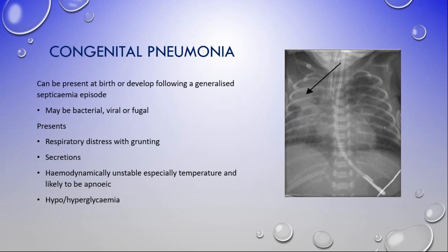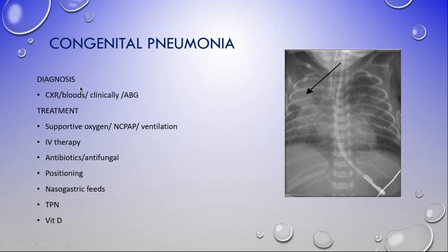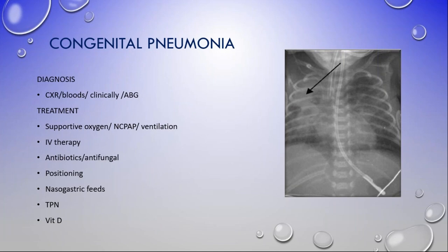Congenital pneumonia is diagnosed by chest x-ray, clinically, and via blood gas. Treatment is supportive oxygenation, nasal CPAP, and ventilation if required. The baby will need IV therapy for antibiotics, antifungals or antivirals as necessary. Positioning is very important — often placing the baby lying on the affected lung lobe to expand it, or using the prone position. Nasogastric feeds reduce the work of breathing. TPN can be started, and vitamin D may be started early, especially in COVID patients.